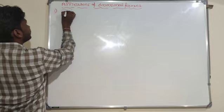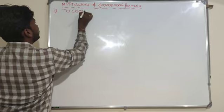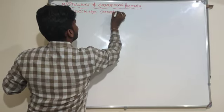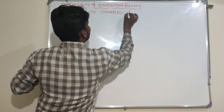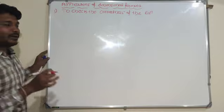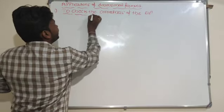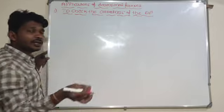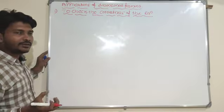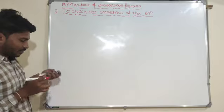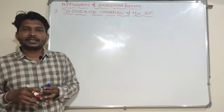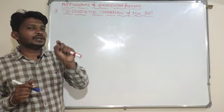The first use is to check the correctness of the equation. From the dimensional formula, you can check whether the given equation is dimensionally correct or not. For example, the equation for centripetal force: F equals m v square by r.